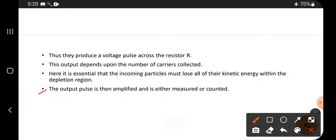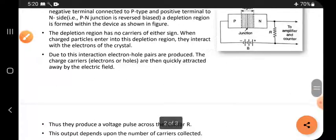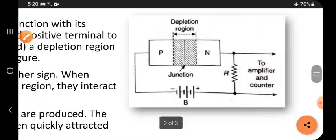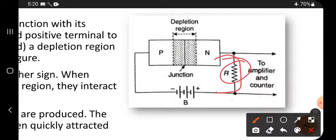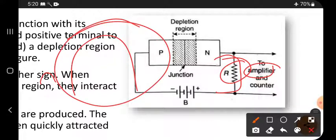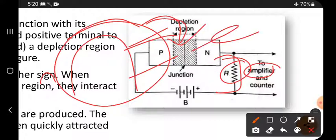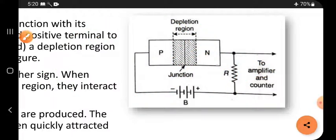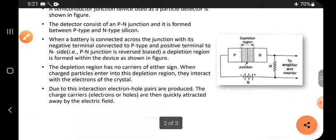The output pulse is then amplified and is either measured or counted. When an electron is traveling, it produces one pulse. That pulse is given to the amplifier. The amplifier makes it bigger in size. These bigger pulses are either counted or measured. Each charged particle can produce one electron, and one electron can produce one pulse. Like this, the number of particles can be counted. That is why it is a detector. That is why it is called a solid state detector.